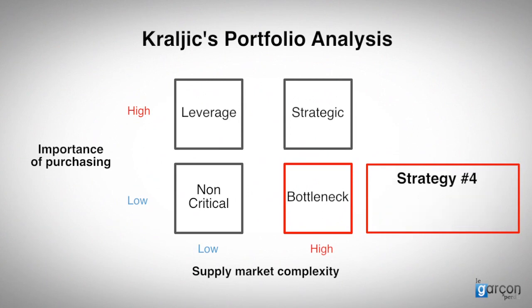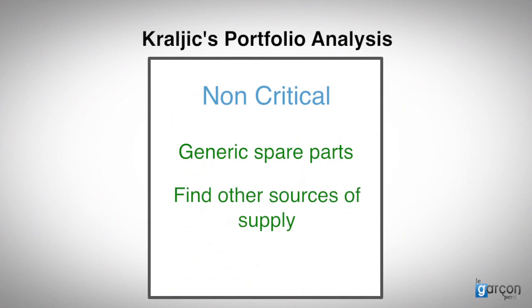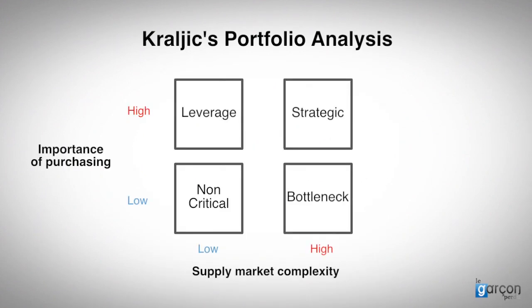Strategy four might be to change the positioning of the category by moving it to another quadrant — in this case, non-critical. We would have to explore the use of generic spare parts or find other sources of supply in order to reduce our risk. In reality, the opposite is more often the case: what should be a non-critical category ends up being a bottleneck category because of specifications that create a de facto monopoly.